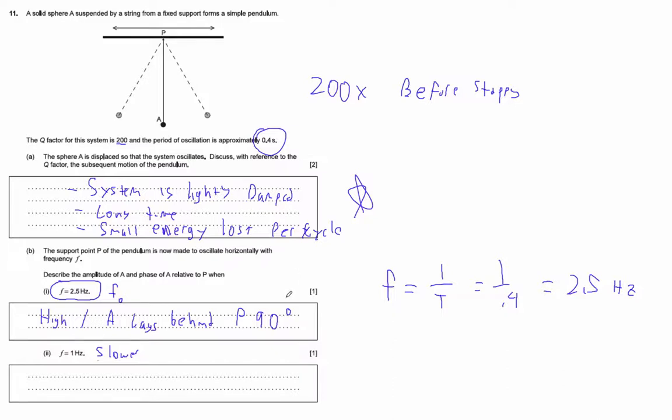Large amplitude at resonance. I don't see where they have phase, but A is going to lag behind P by 90 degrees because P is driving it. The driver is always 90 degrees ahead of the resonance system.